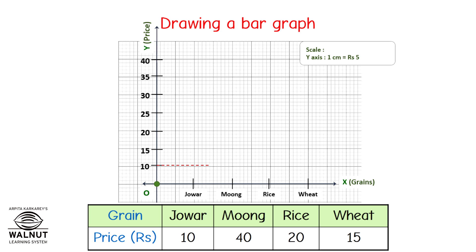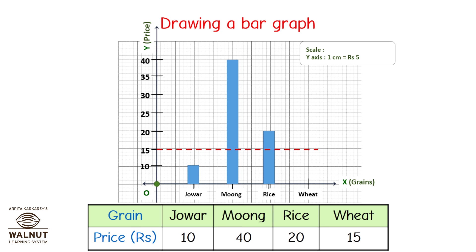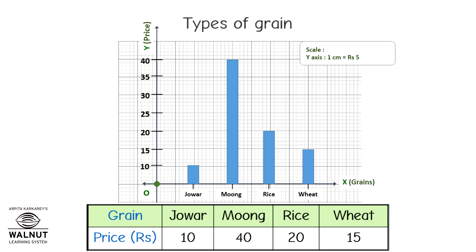Now, jawar is at 10 rupees — that is this level, so we mark the rectangle. Moong is 40, so 40 is this level and we mark the rectangle for moong. Rice is 20 rupees, so this is the level for rice and we draw the rectangle. Wheat is 15 rupees, so we mark the level for wheat and draw the rectangle. What title can we give this graph? The prices of grain, or grain and its prices. And our graph is complete.